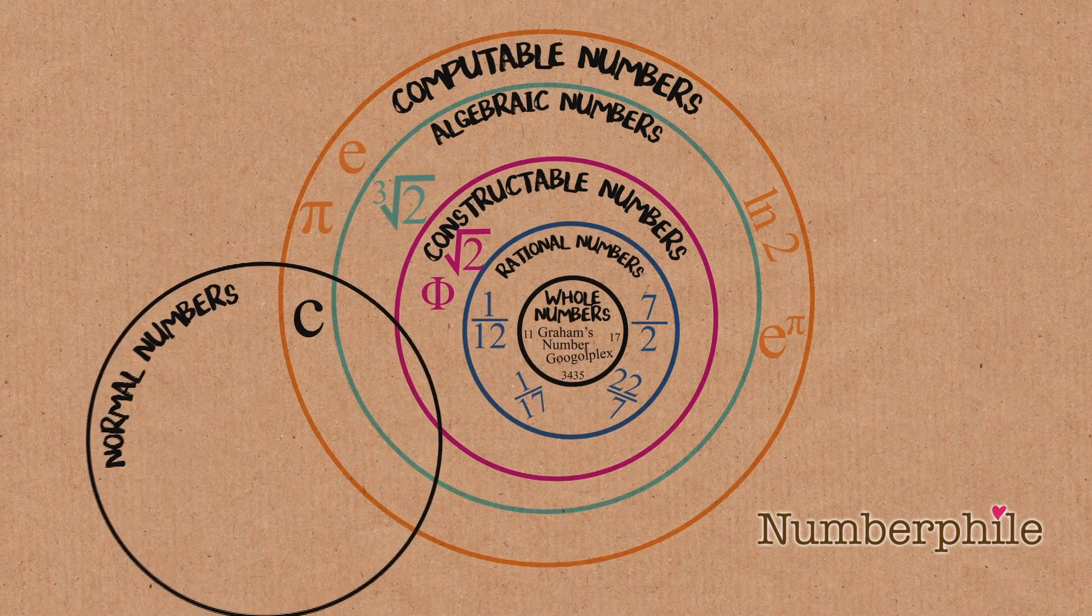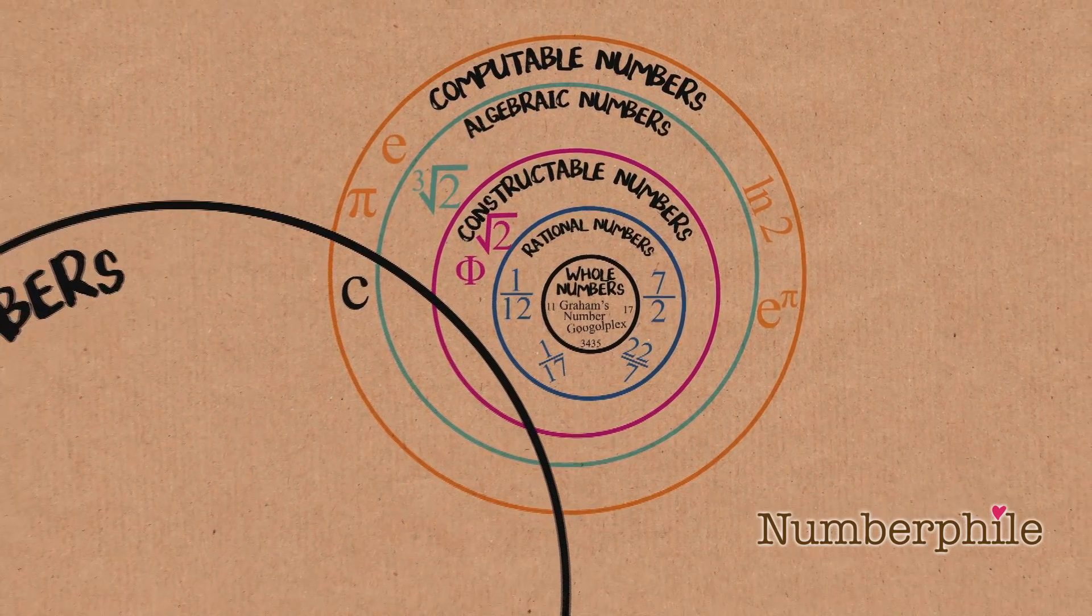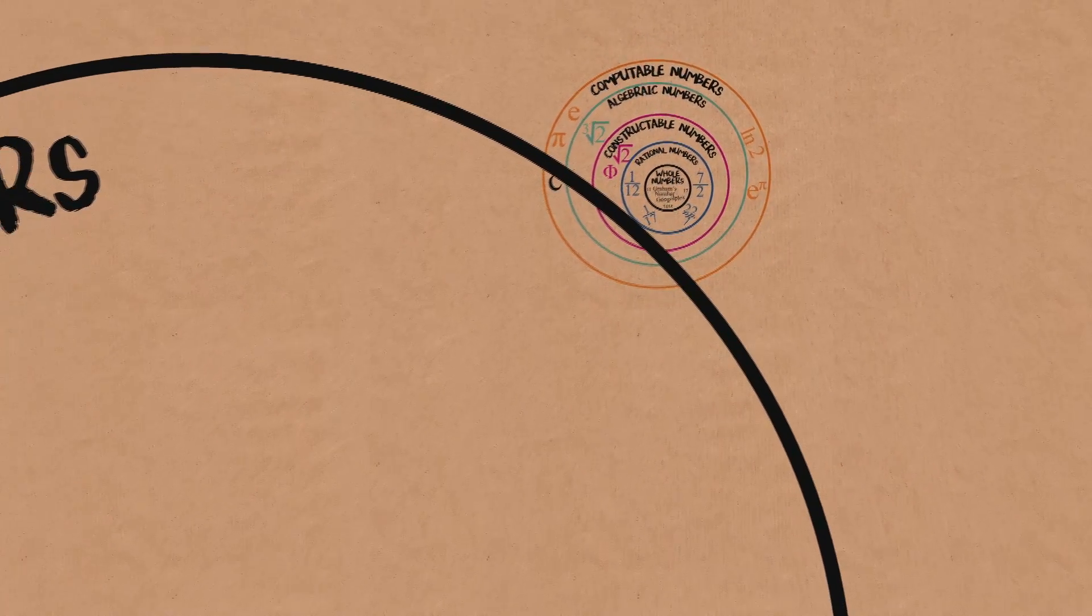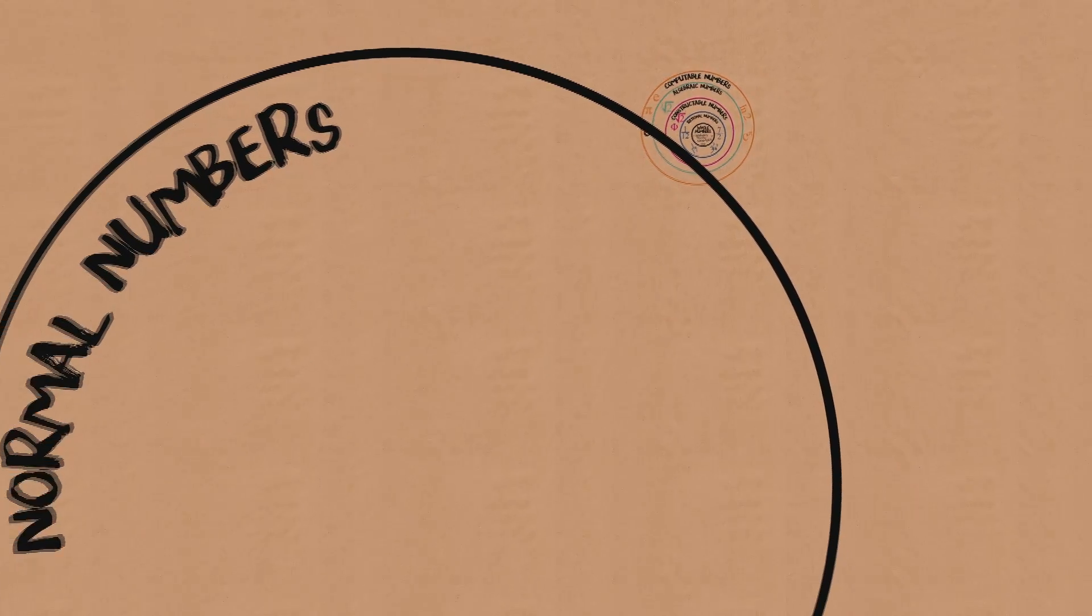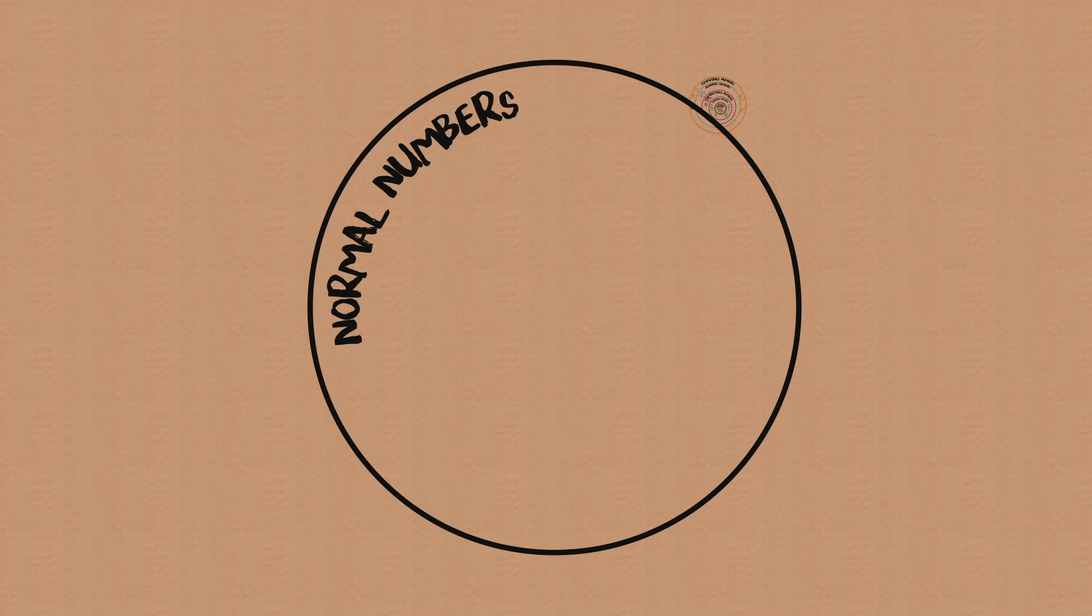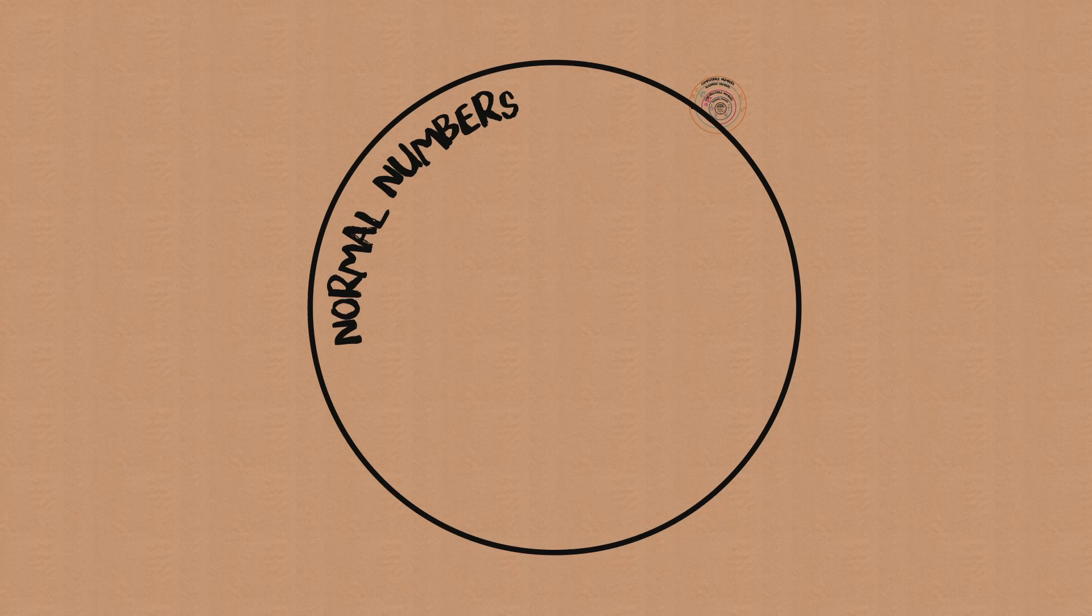Most numbers are uncomputable. Actually, this is the biggest section. This is numbers. This is where numbers are, and we have none. So in the main category of numbers, where all the numbers are, apart from a few trivial side effects, we know zero of them.